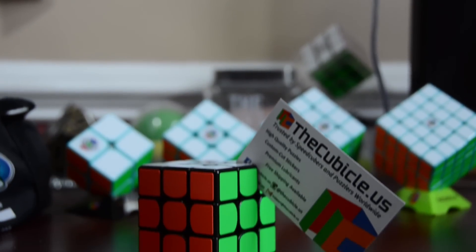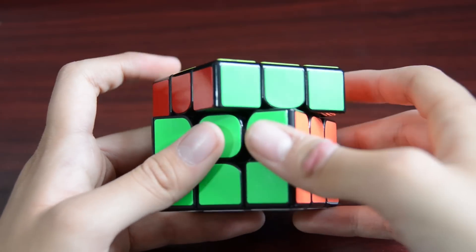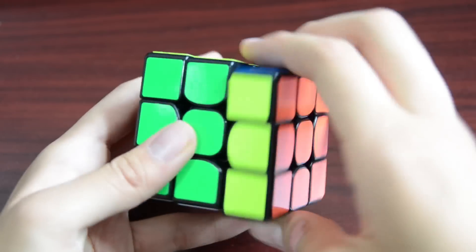This cube meets all standards for a modern speedcube. $17 in price at the cubicle.us, 56.5mm in size, and run-of-the-mill Moyu shades. Corner cutting is as good as it gets, over 45 degrees, and pretty much line-to-line reverse.